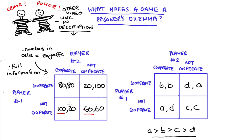Now from player two's perspective: if player one cooperates, player two could cooperate and get 80 or not cooperate and get 100. Since 100 is bigger than 80, not cooperating is player two's best response. If player one does not cooperate, player two could cooperate and get 20 or not cooperate and get 60. Since 60 is bigger than 20, not cooperating is player two's best response to player one not cooperating.